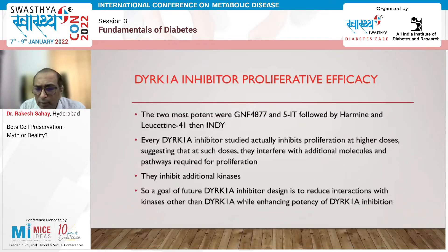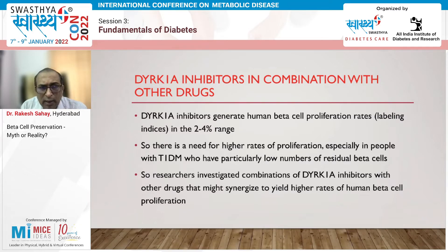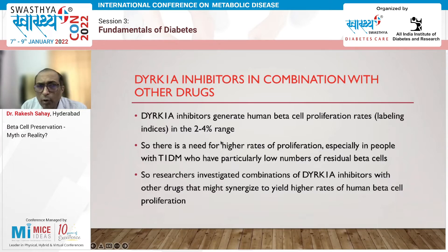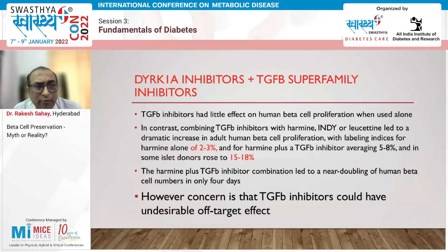The inhibition efficacy of DYRK1A alone may not be enough to produce sufficient proliferation. It increases proliferation from less than 1% in human islets to a range of 2-4%. To further increase proliferation rates, researchers have combined DYRK1A inhibitors with other drugs. TGF-beta superfamily inhibitors have been studied in combination.